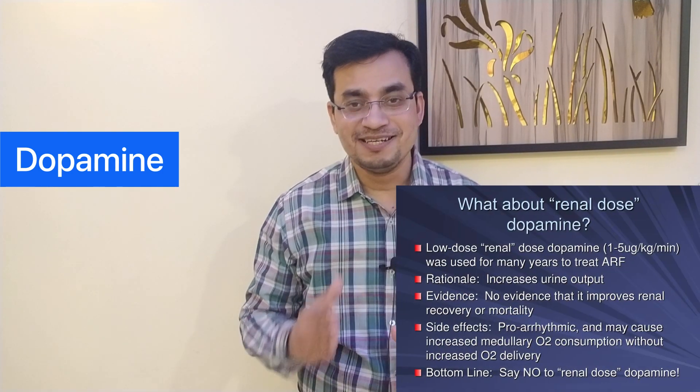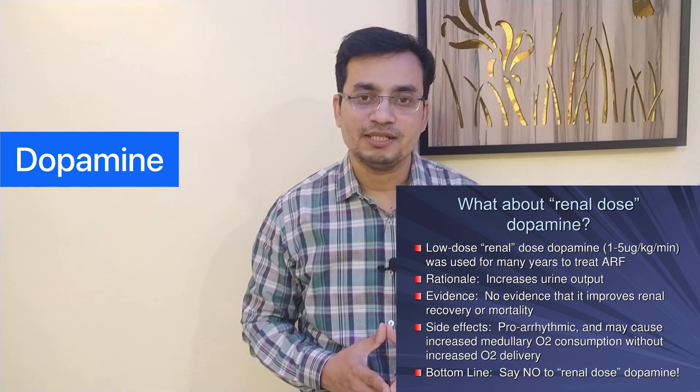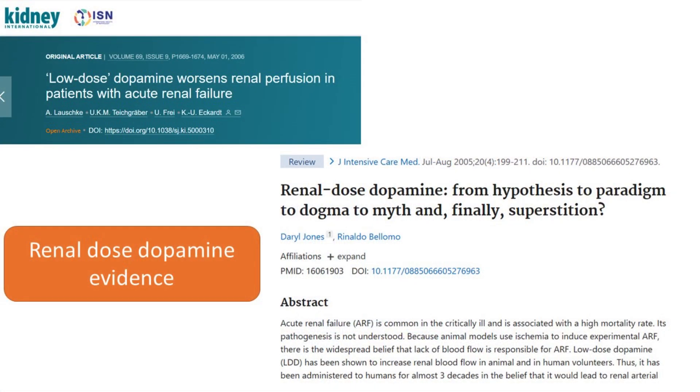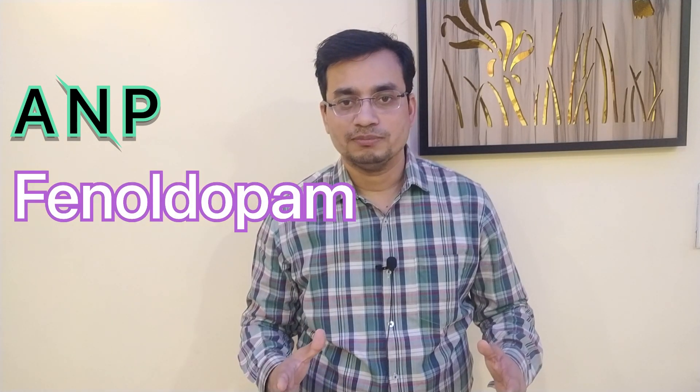Dopamine is known to cause tachyarrhythmia and is therefore not favored. For many years, low-dose or renal-dose dopamine was believed to prevent renal vasoconstriction and improve kidney function. But it is now clear that dopamine does not prevent AKI and does not have any survival advantage. Hence, it should not be used. ANP, fenoldopam, and other vasodilators also fail to show any positive outcome differences in studies, and hence KDIGO does not endorse them for use in AKI patients.